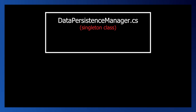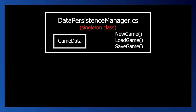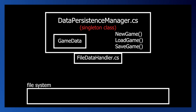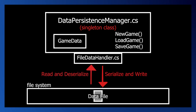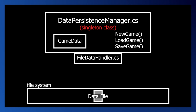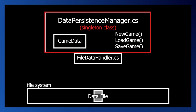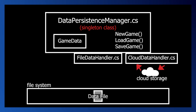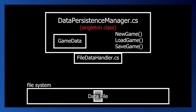Before we jump into implementing anything, I want to give a quick overview of how this is going to work. In the save and load system that we're starting with, there's a singleton class called the DataPersistenceManager that manages our game data and also exposes some methods to allow the orchestration of saving and loading that data from any other script. The DataPersistenceManager uses a class called the FileDataHandler to interact with storing and accessing data on our machine's local file system. This includes serializing our data and writing it to a file, as well as deserializing our data and reading it from that file. The idea behind having a separate class to handle interactions with the method of storage is that it keeps the rest of our system mostly decoupled from the method of storage, making it easier to expand on or change in the future.